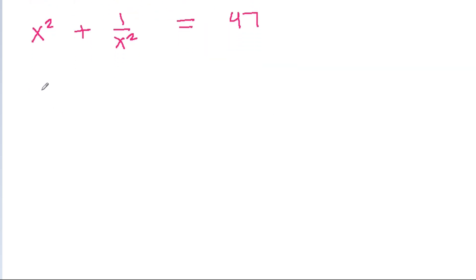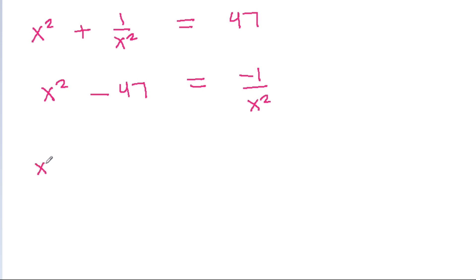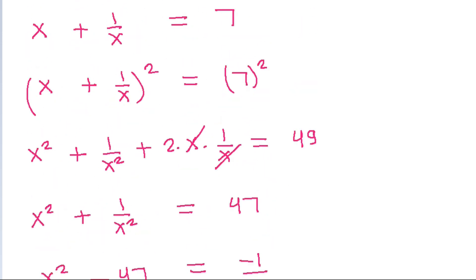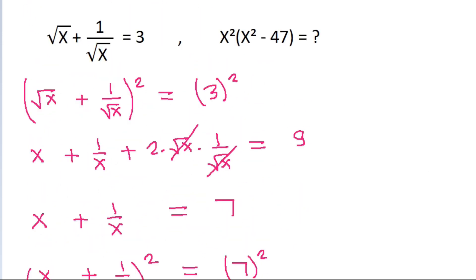And x square minus 47 will be equal to minus 1 by x square. If we multiply both sides by x square, then x square times x square minus 47 will be equal to minus 1.